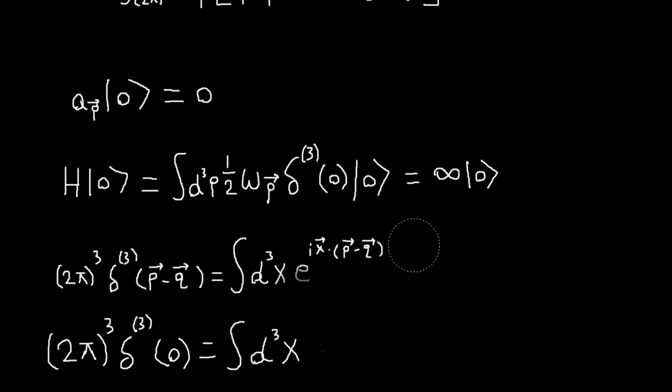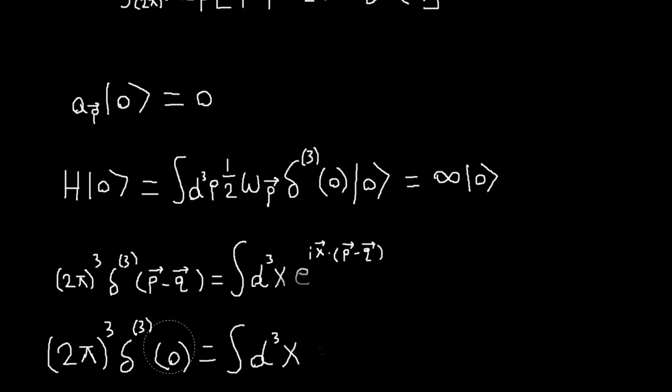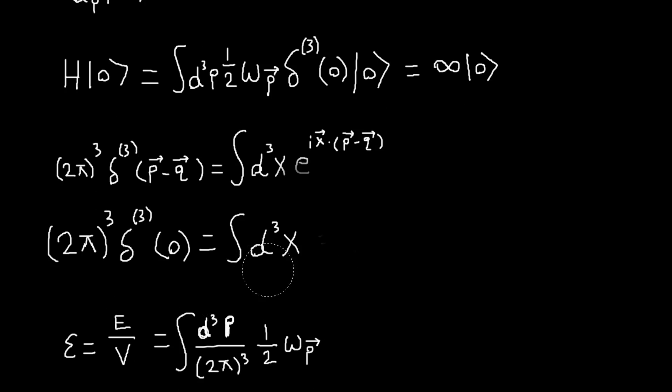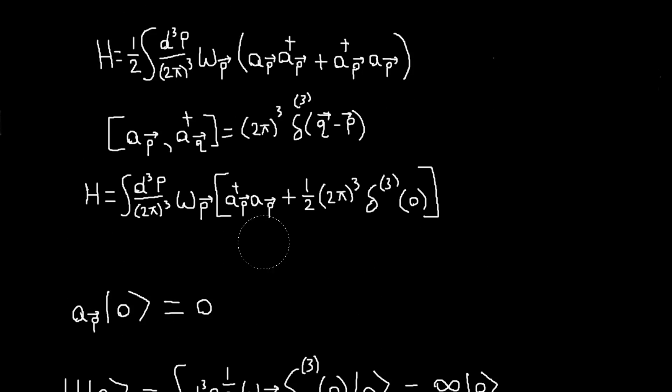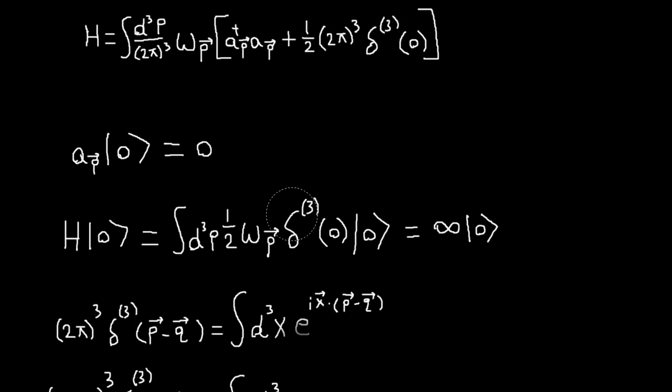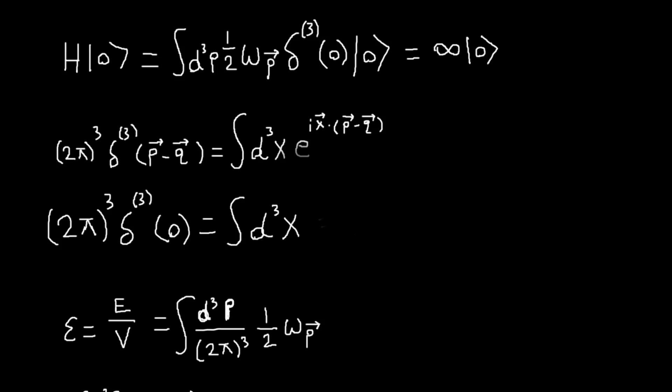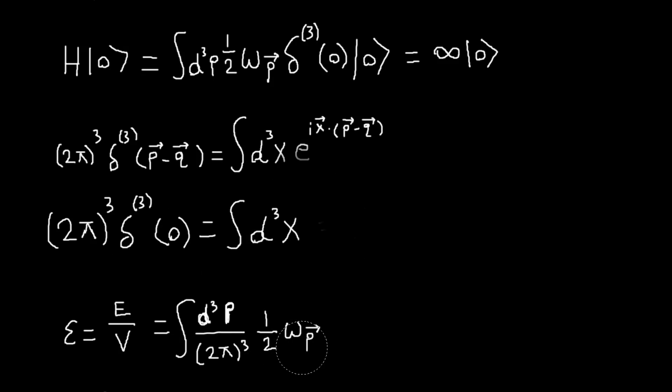So, the solution to dealing with that is to look at the energy density instead. Our delta function is like the volume of our space divided by 2 pi cubed. So, if instead we work with the energy density, we take our energy here and divide by 2 pi cubed delta of zero, then we'll get this expression for the energy density.